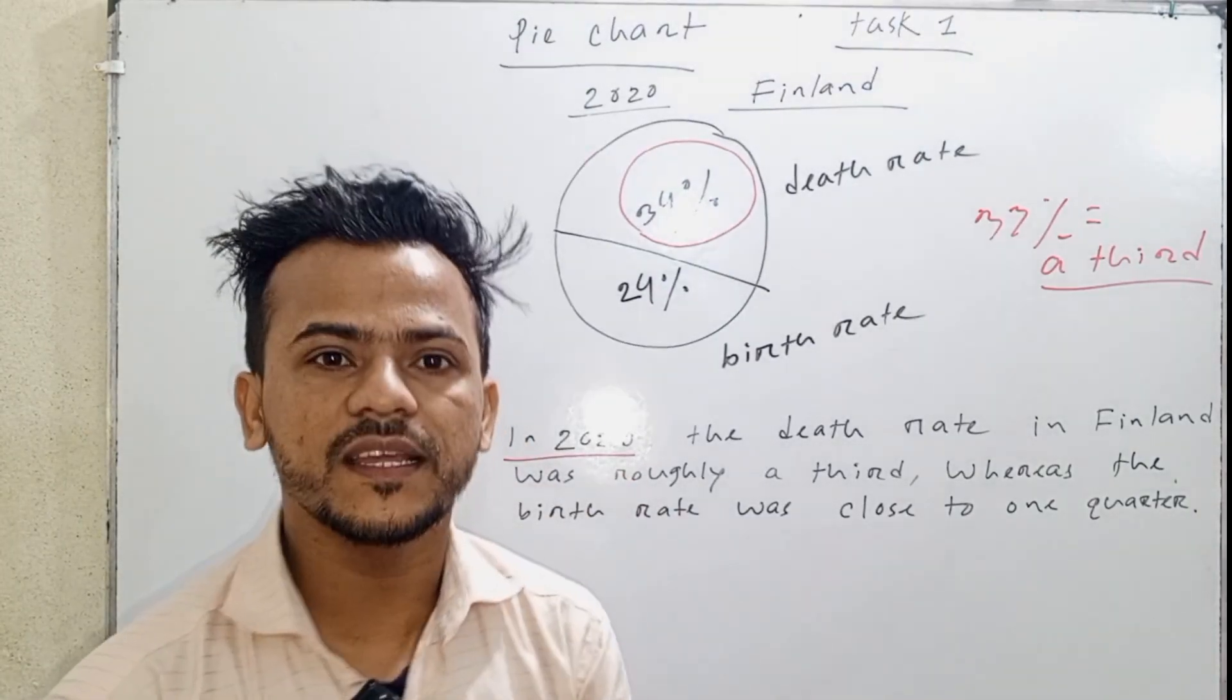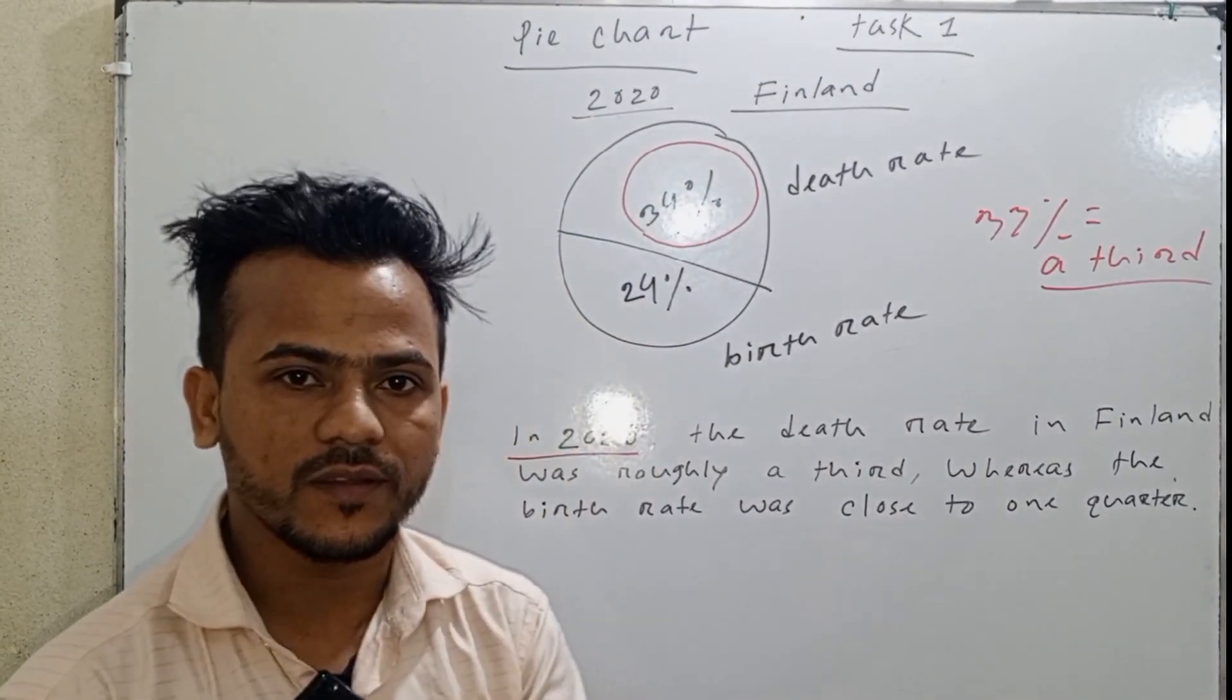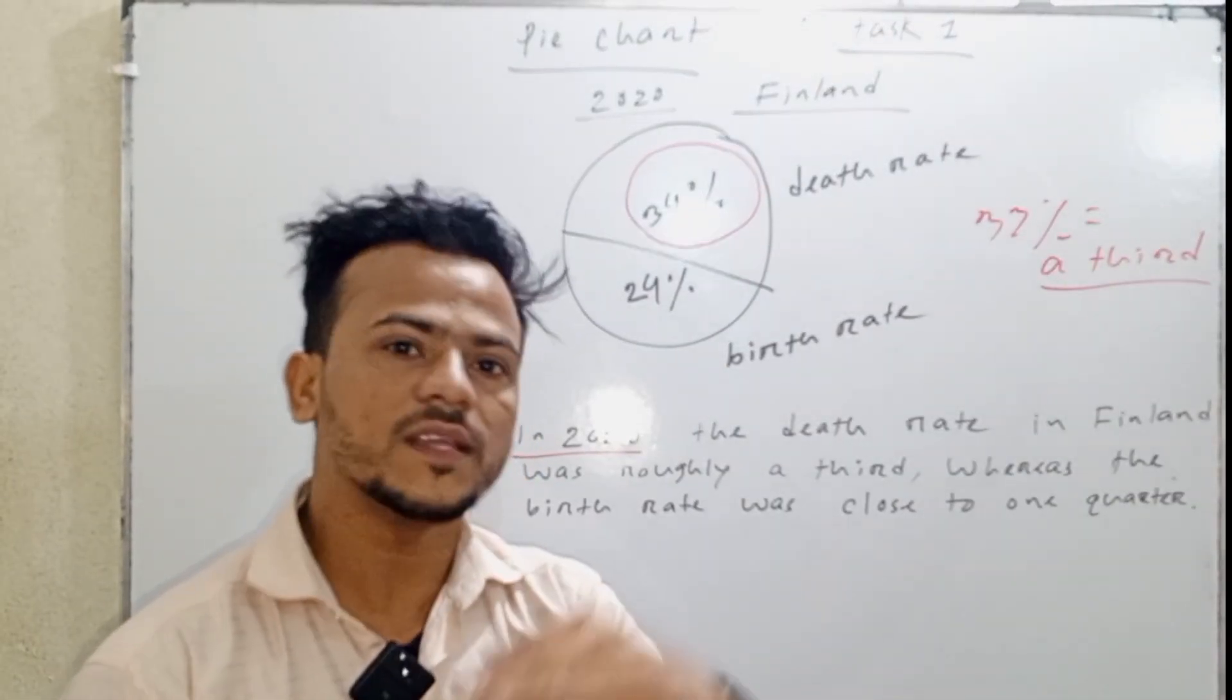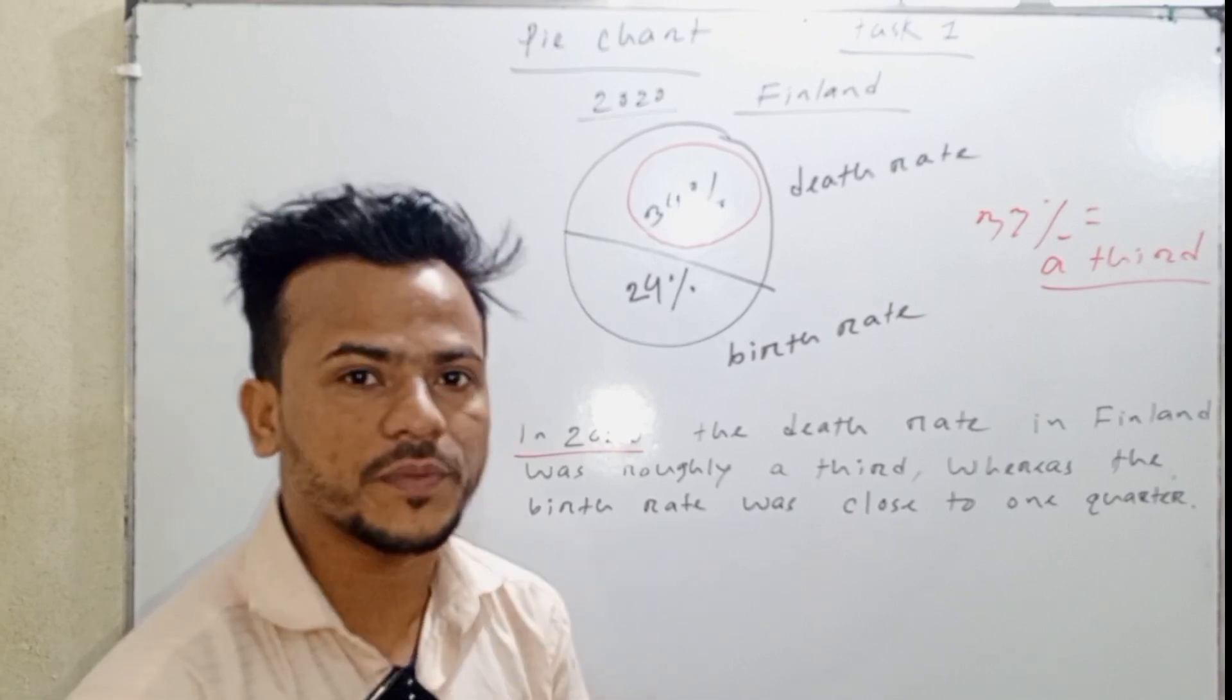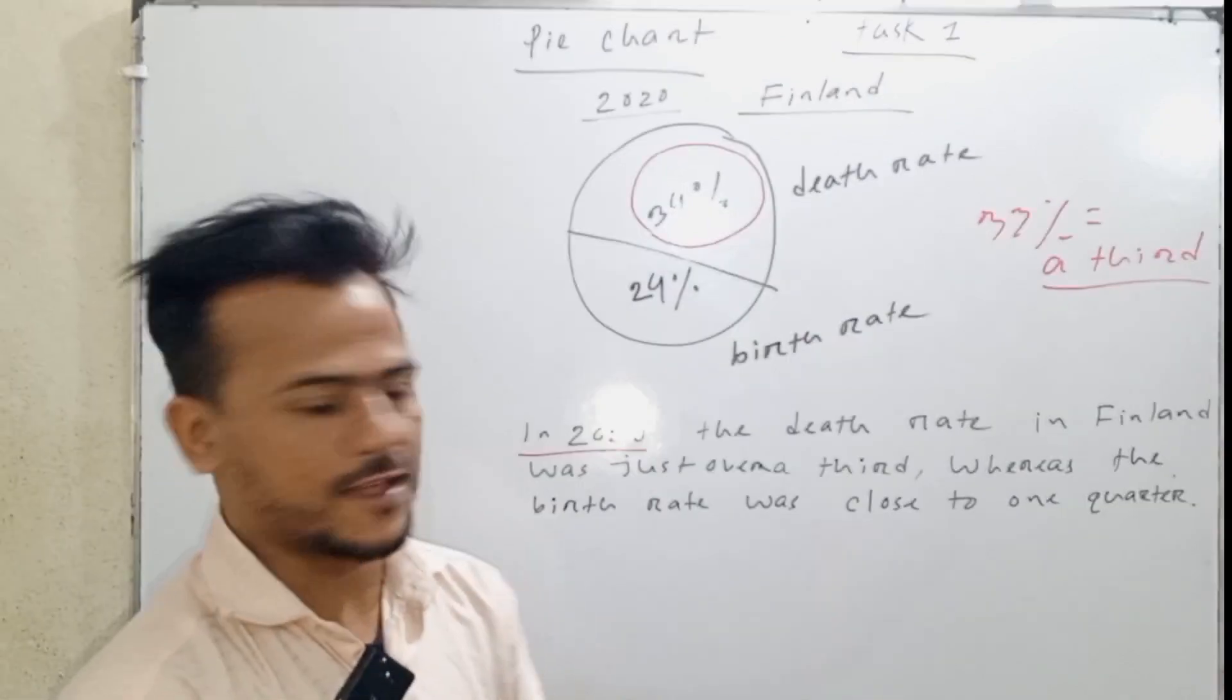It is less common. The death rate in Finland, the actual value is more than one third. 33% is one third. So, the Finland rate is more than one third. The actual value is just over one third.